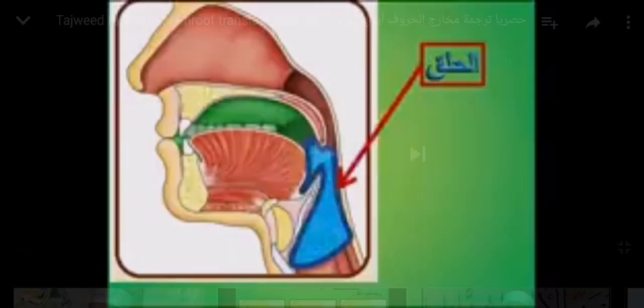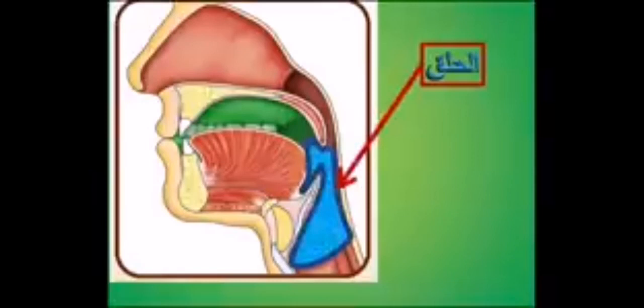Now we'll watch a video by Sheikh Khayman Suud, a living scholar, explaining a part of the poem of Imam Ibn al-Jazari where he mentions the specific Makharij of Al-Halq. The verse states: from Aqsa al-Halq — Hamza and Ha; and there are two more articulation points to be discussed after.